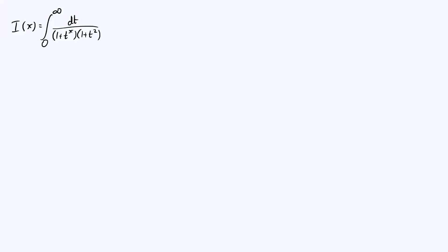Hello everyone. Lately I've been enjoying this method of evaluating integrals by first differentiating them with respect to some parameter. Today I wanted to share another pretty cool example of an integral we can evaluate using this technique. The integral we're going to look at is the integral from zero to infinity of dt over 1 plus t to the x times 1 plus t squared, where x is a parameter, written as i of x.